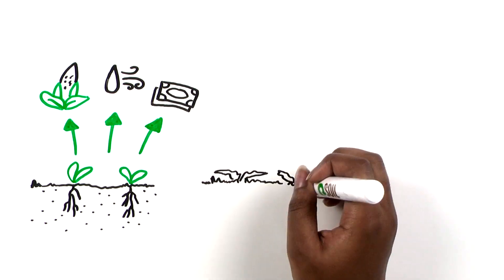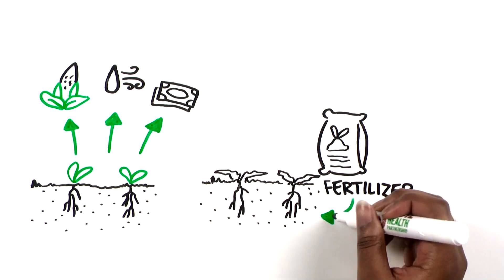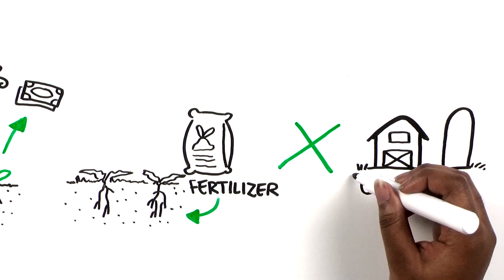The problem is, degraded soil cannot hold as much fertilizer for the plants, letting it leach off the farm more easily.